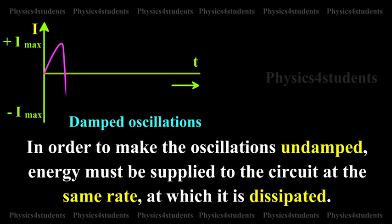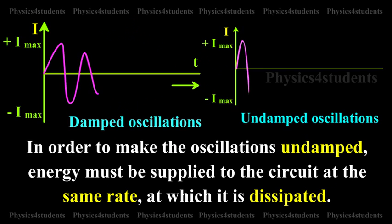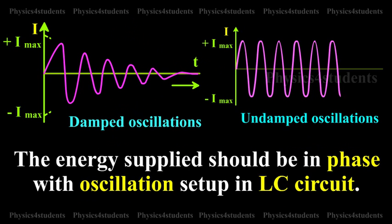In order to make the oscillations undamped, energy must be supplied to the circuit at the same rate at which it is dissipated. The energy supplied should be in phase with the oscillations set up in the LC circuit.